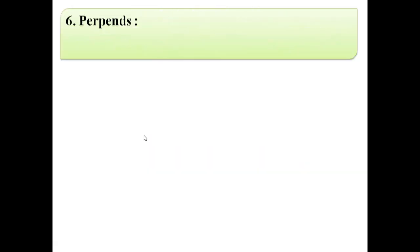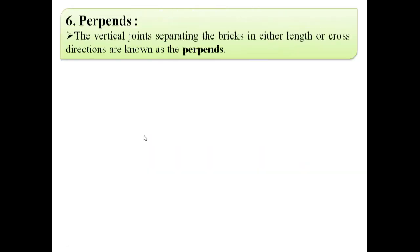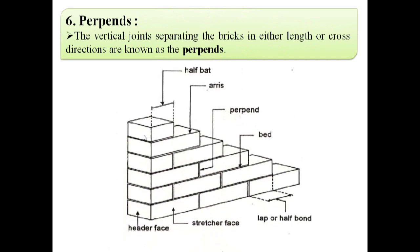The sixth term is perpents. The vertical joints separating the bricks in either length or cross directions are known as perpents. In this image we can see this is the perpents, which is the vertical joints separating the bricks in either length or cross directions.